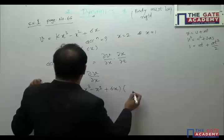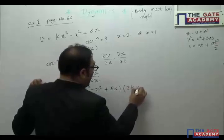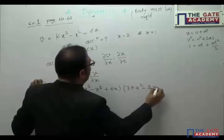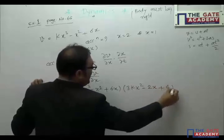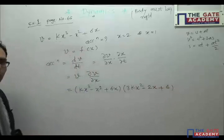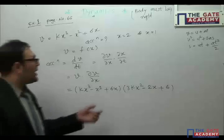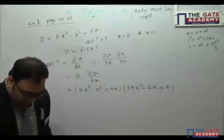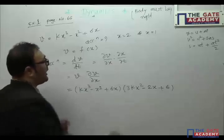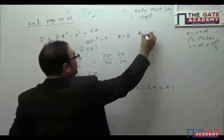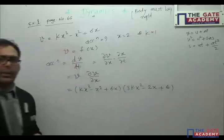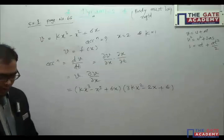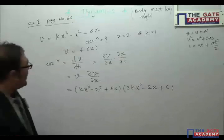So dv/dx = 3kx² − 2x + 6. In the next step, we substitute x = 2 and x = 1 to get the acceleration values.